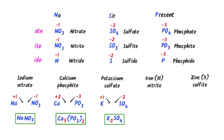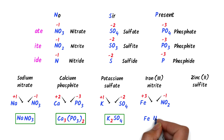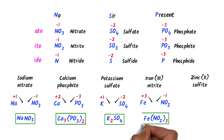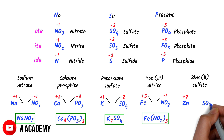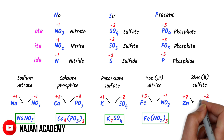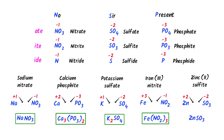In case of iron(3) nitrite, the oxidation state of iron is positive 3 and the charge on nitrite ion is negative 1. I cross their respective charges and get Fe(NO₂)₃. In case of zinc(2) sulfite, the oxidation state of zinc is positive 2 and the charge on sulfite ion is negative 2. I cross their charges and get ZnSO₃ — zinc sulfite. Using this simple trick, we can easily write chemical formulas of ionic compounds with polyatomic ions.